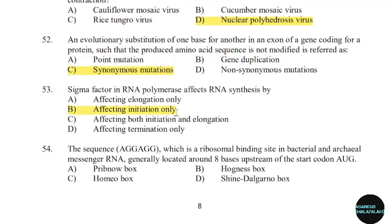54th question: The sequence which is a ribosomal binding site in bacterial messenger RNA, generally located around 10 bases upstream of the start codon AUG. Correct answer: Option D — Shine-Dalgarno box.